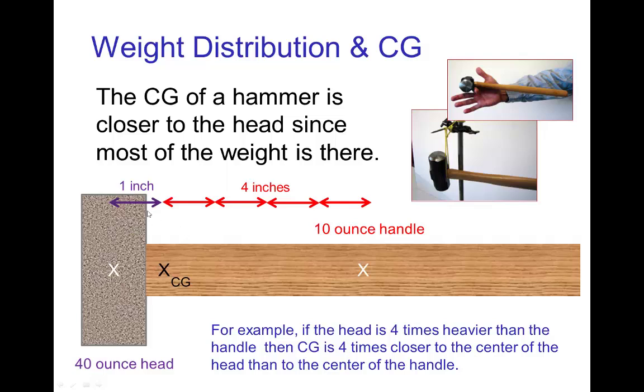So if it was simple like this, it's something that could be calculated. Say the head is four times heavier than the handle, then the center of gravity is located four times closer to the head of the hammer than to the center of the handle, and so forth.